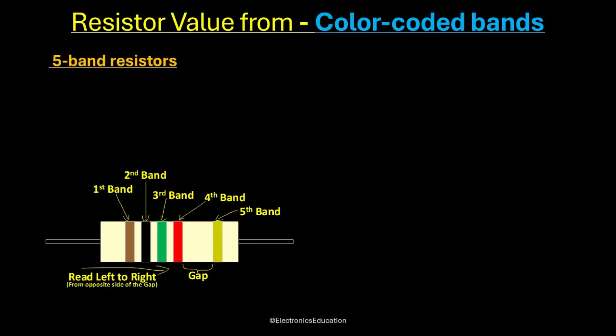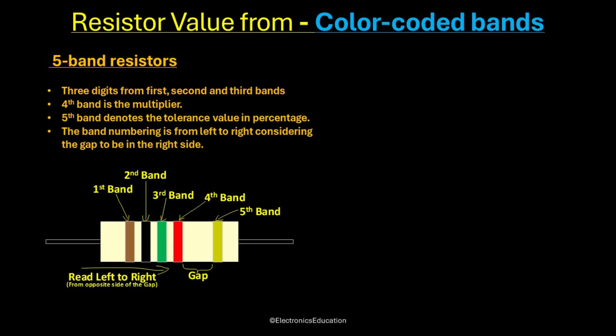The 5-band scheme is used for resistors with higher accuracy. Here, the first three digits are derived from the first, second, and the third color bands. The fourth color band is the multiplier. The fifth band is used for the tolerance value.